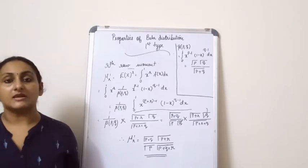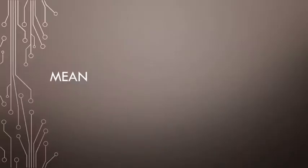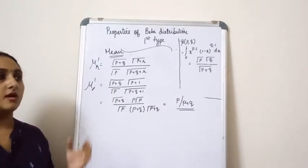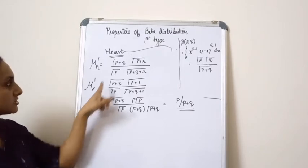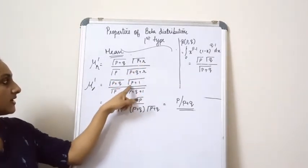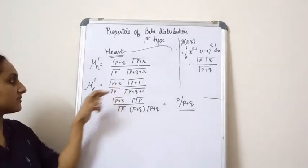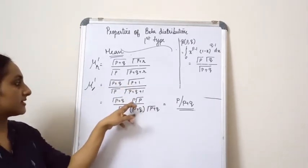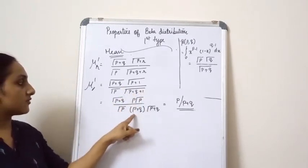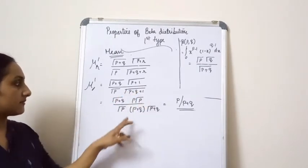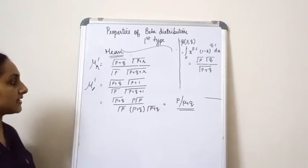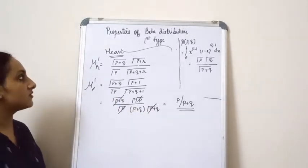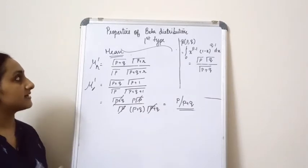Now from the r-th raw moment we find the mean by setting r=1, giving mu_1'. Substituting r=1 into the formula, we get Gamma(p+1) in the numerator. We rewrite Gamma(p+1) as p*Gamma(p), and in the denominator Gamma(p+q+1) becomes (p+q)*Gamma(p+q). Many terms cancel, and the remaining result is p/(p+q). This is the mean of the Beta distribution of the first kind.